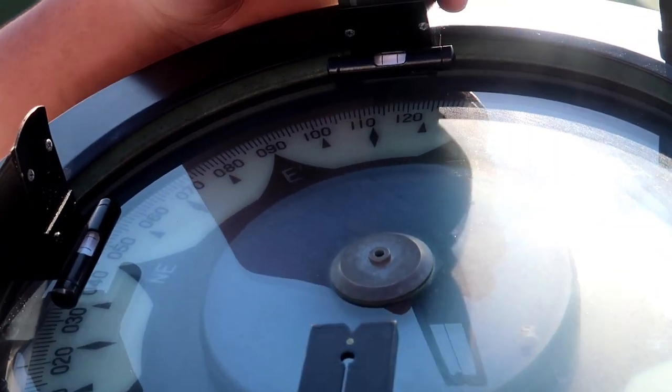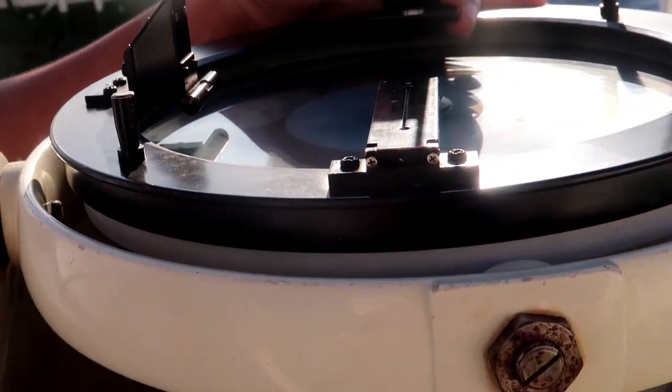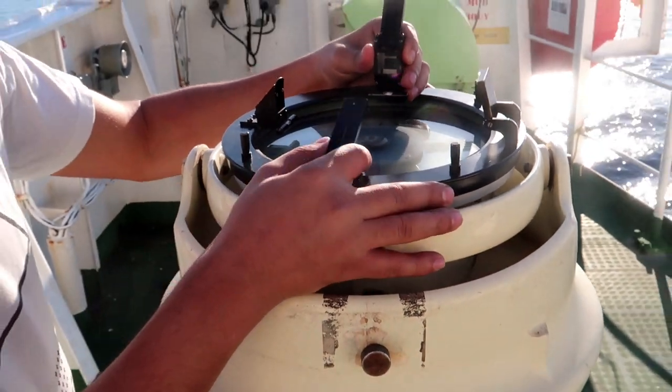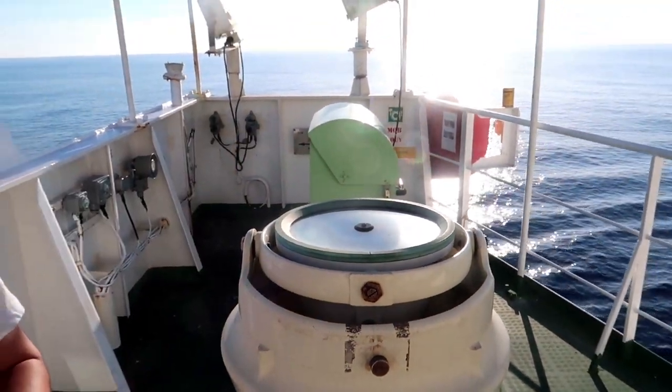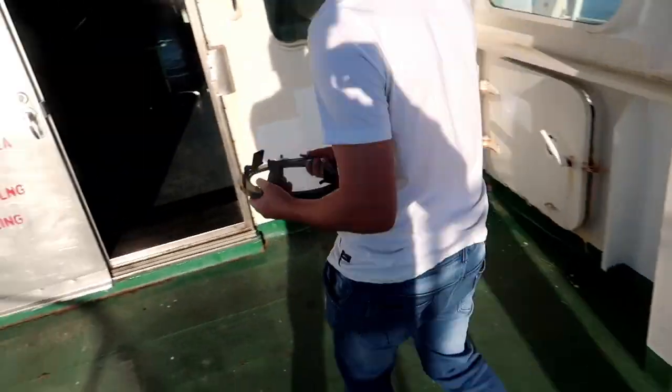At this point we have got the gyro bearing as 120 degrees for the sun. Now we will go inside to note down other readings and do the calculation.